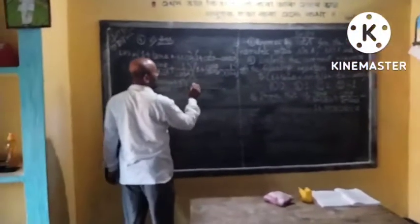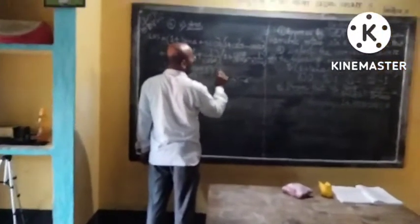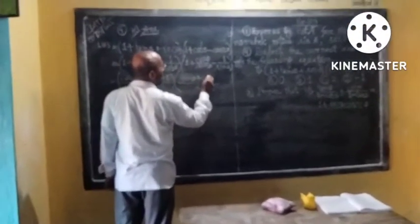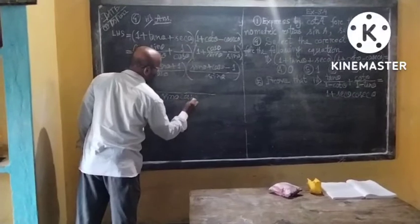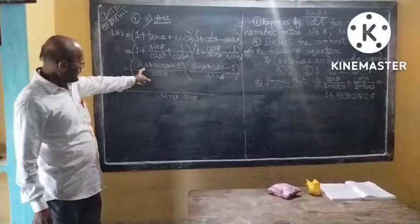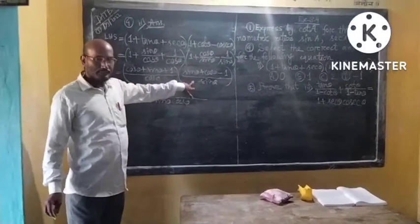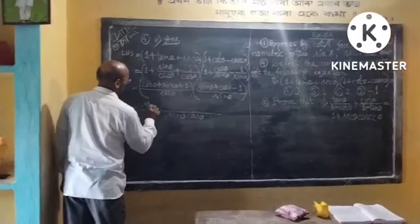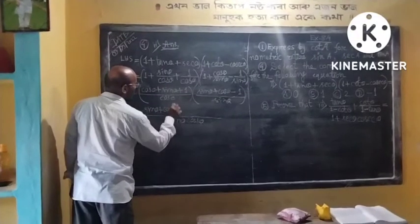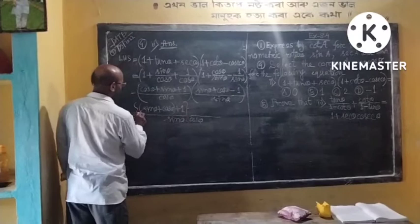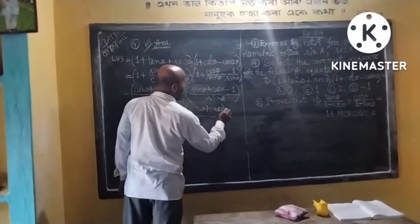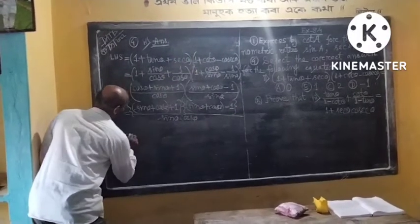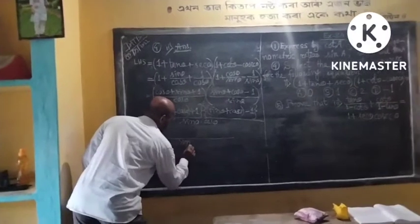In the second part, LCM is sin theta: sin theta plus cos theta minus 1. Multiplying, we get sin theta into cos theta. Put in the formula — the heart formula: (sin theta plus cos theta plus 1) whole into (sin theta plus cos theta minus 1) equals sin theta into cos theta.